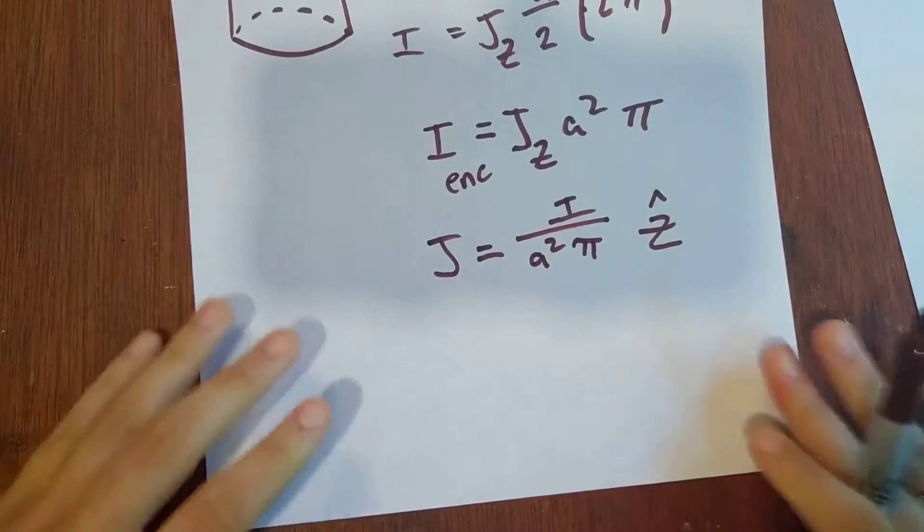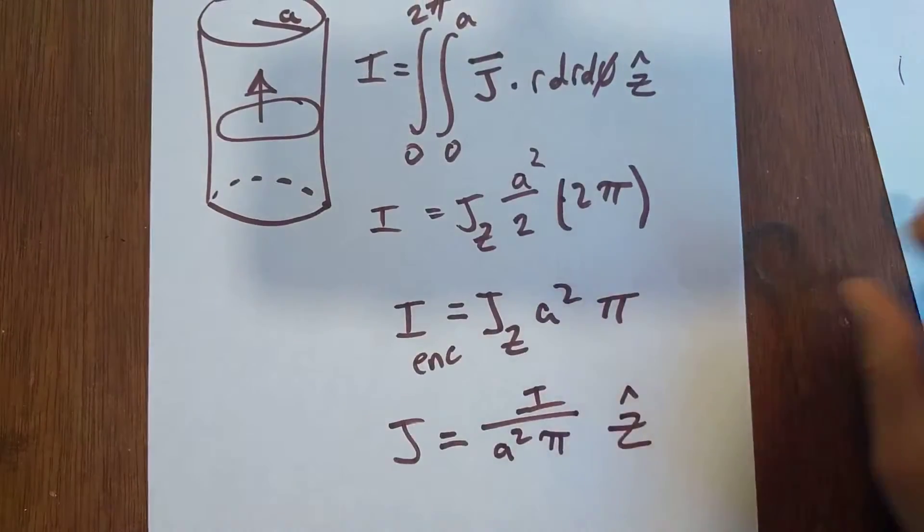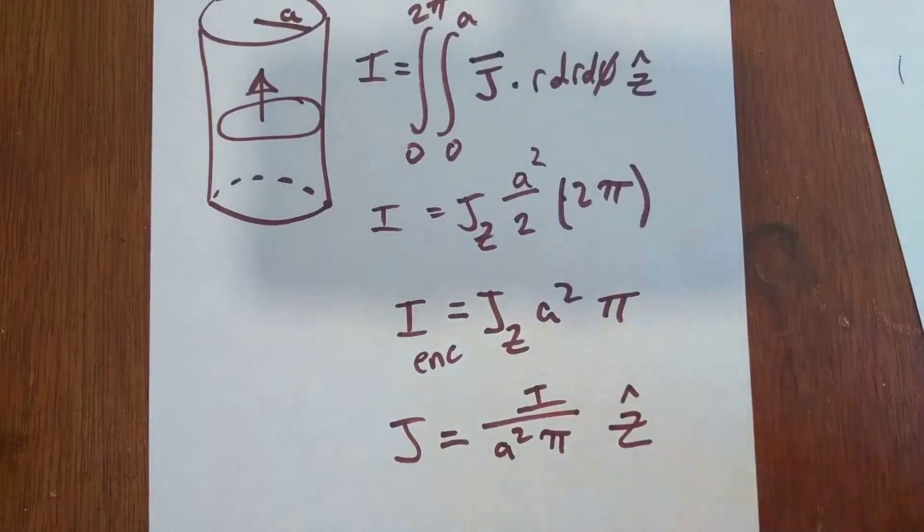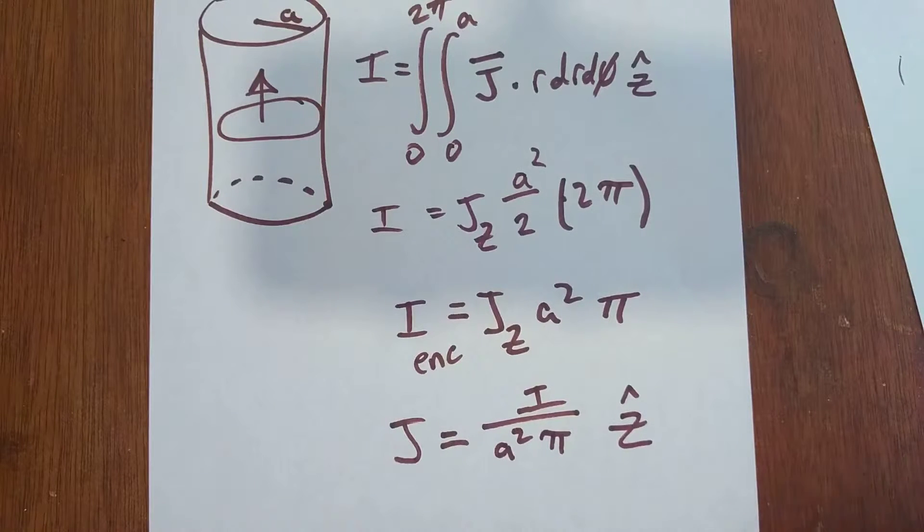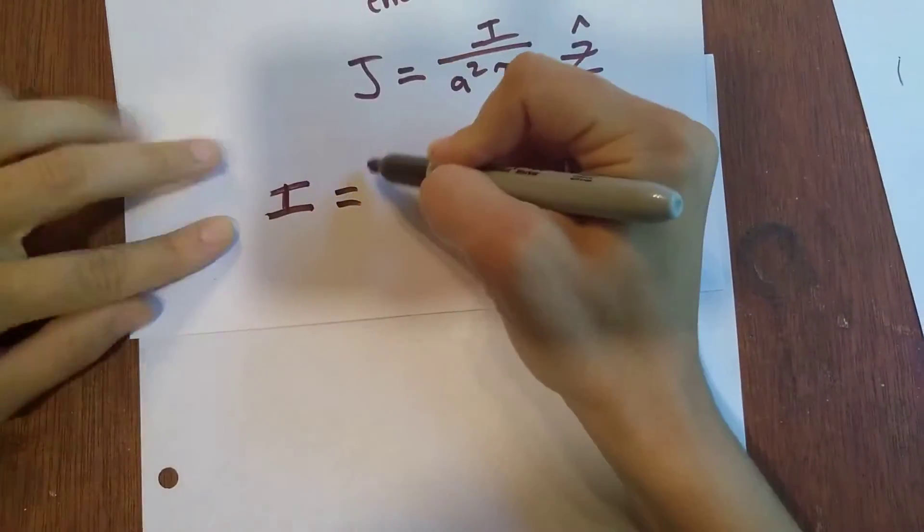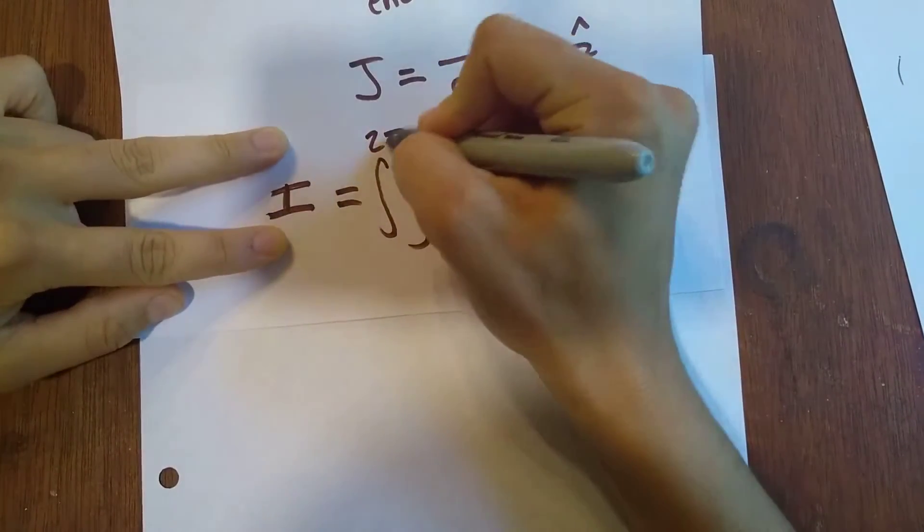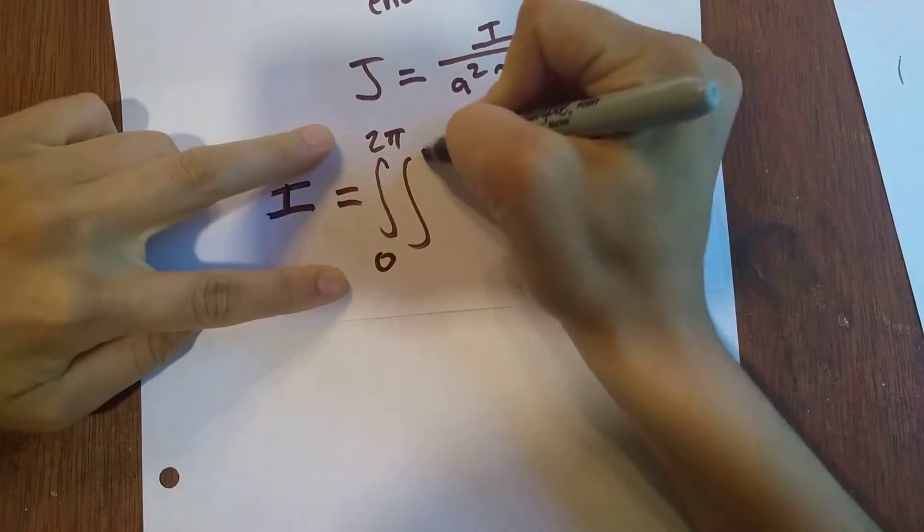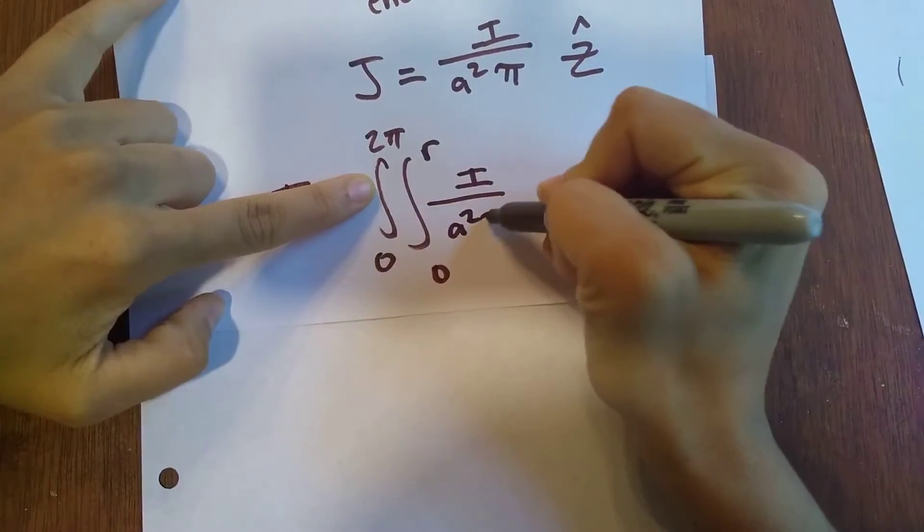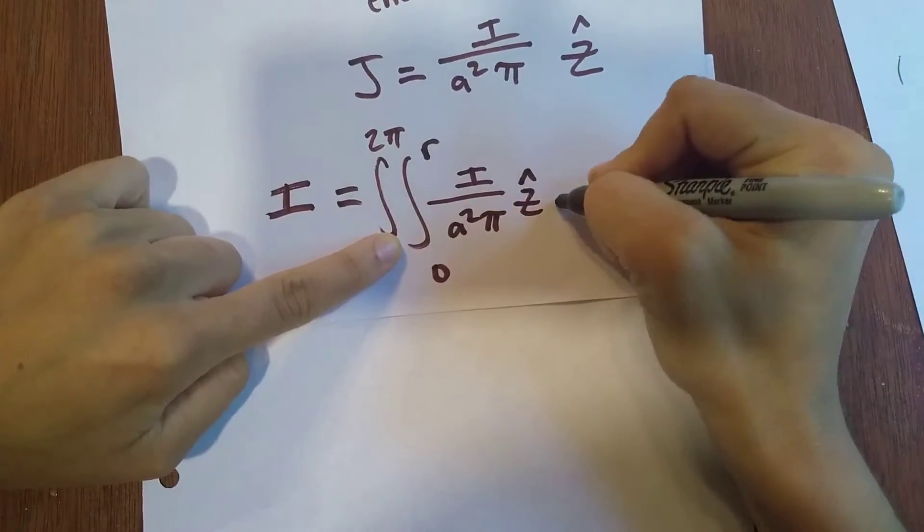So now this makes it where we have the value of J for this entire cylinder. So this way we can solve for the I enclosed and make it a function of how big our radius is. So we're going to plug it back into a new equation.